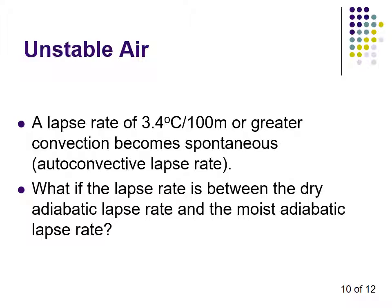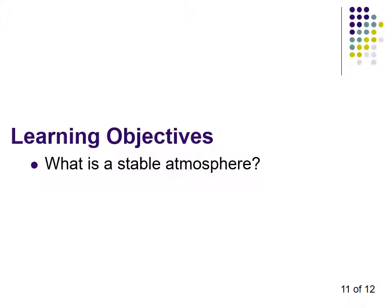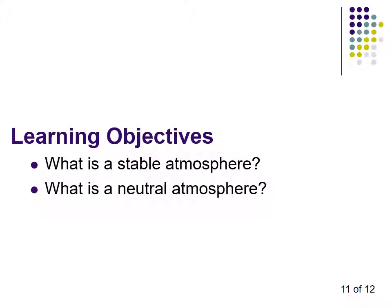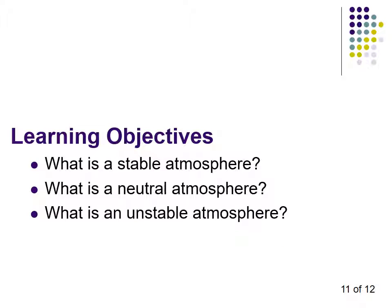If the lapse rate is between the dry adiabatic lapse rate and the moist adiabatic lapse rate, you'll have to wait for Part Three to find out what kind of environment that produces. What you need from Part Two is: what is a stable atmosphere, what is a neutral atmosphere, and what is an absolutely unstable atmosphere. See you in Part Three.